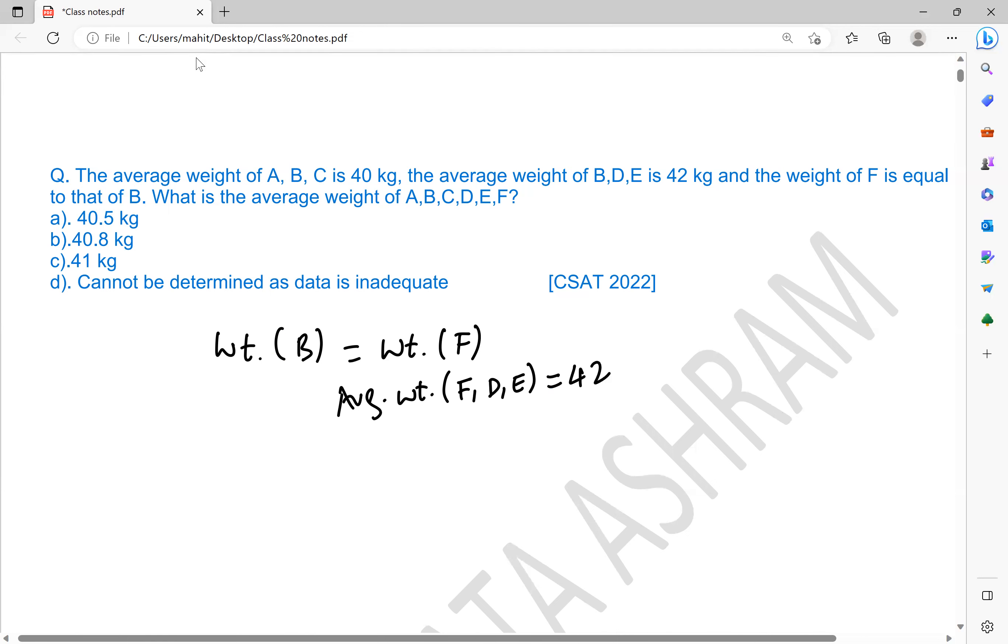Now it becomes easier. Since the average weight of A, B, C is 40 and average weight of F, D, E is 42, you can write the average weight of all six of them to be 40 plus 42 divided by 2, which equals 41.